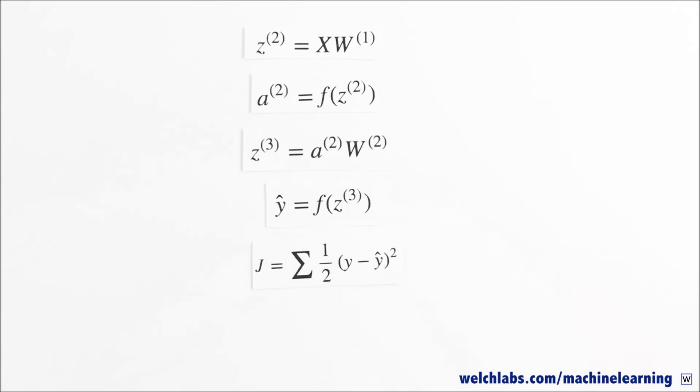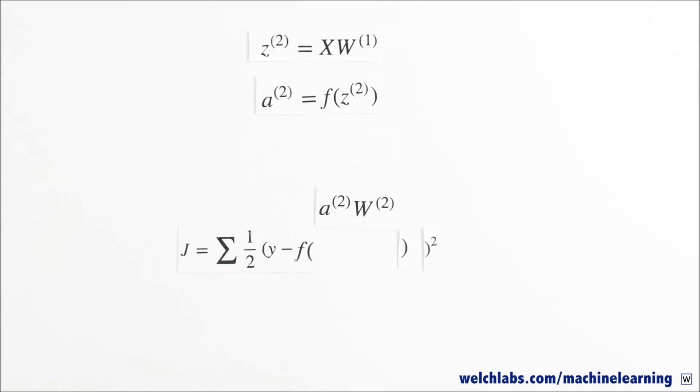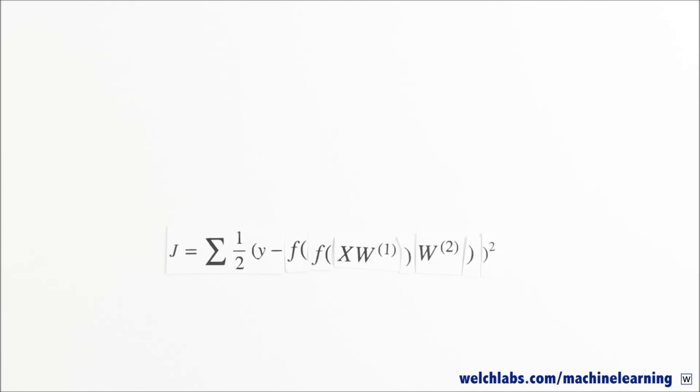Let's look at our equations so far. We have five equations, but we can really think of them as one big equation. And since we have one big equation that uniquely determines our cost j from x, y, w1, and w2, we can use our good friend calculus to find exactly what we're looking for.